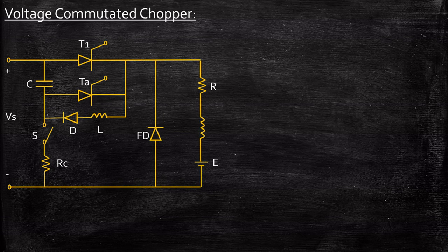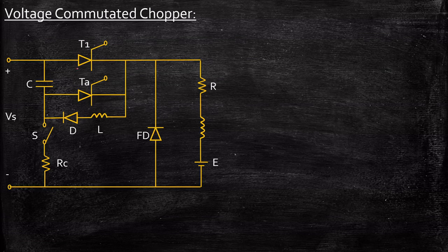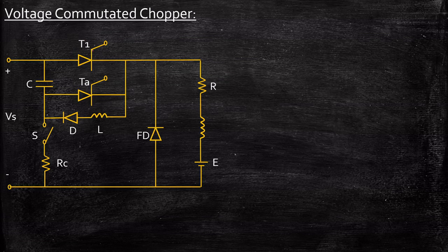This is the circuit diagram of a voltage commutated chopper. We need to understand what this circuit is and why it is required. Whenever we are using thyristors in DC-DC converters or chopper circuits, we need to have an external mechanism to turn the circuit off. If you have to turn off T1, you need an external source or an external way to turn it off in this particular circuit.